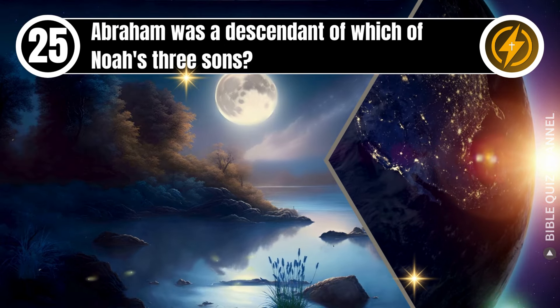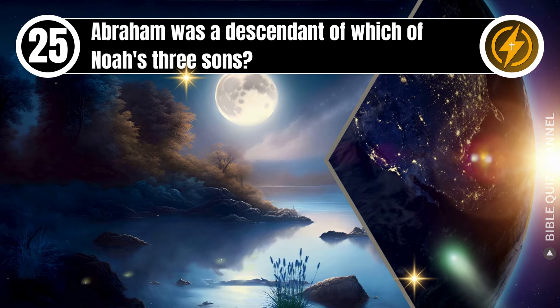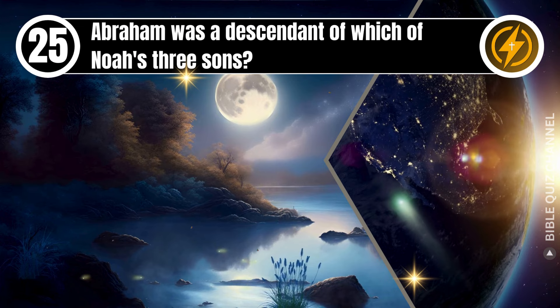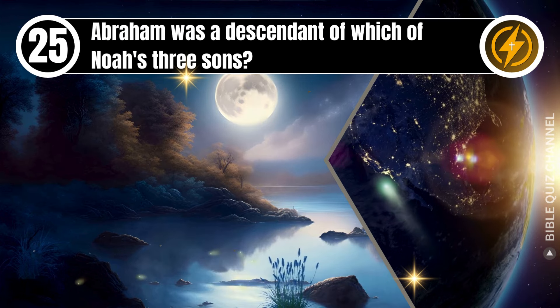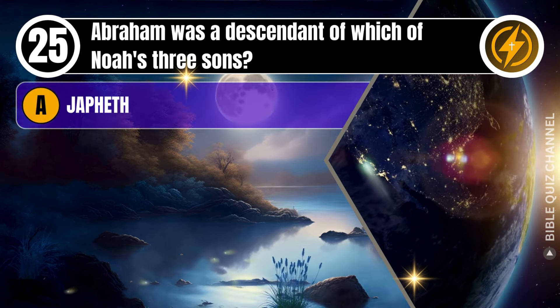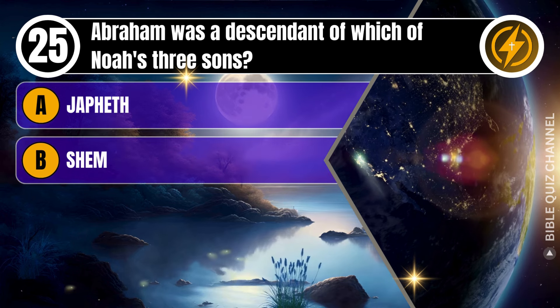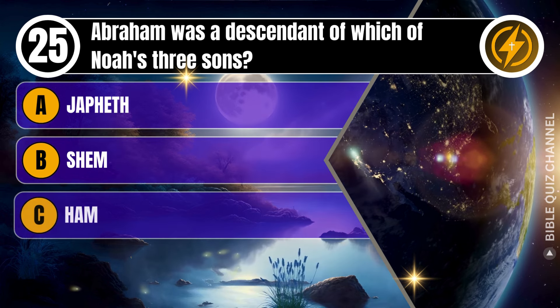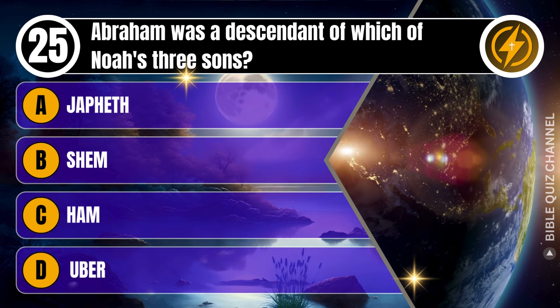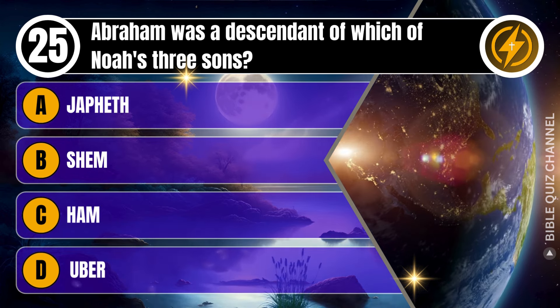Question 25. Abraham was a descendant of which of Noah's three sons? A. Japheth. B. Shem. C. Ham. D. Uber. You get 10 seconds.